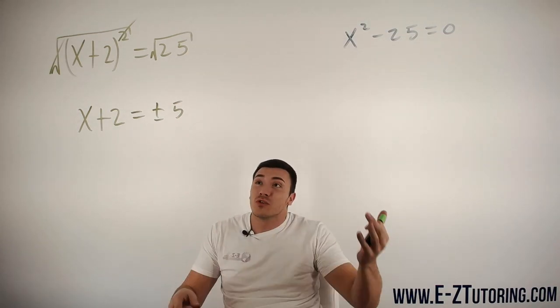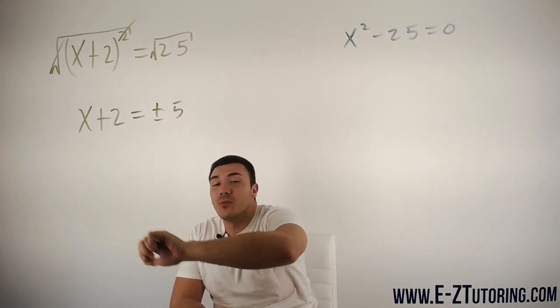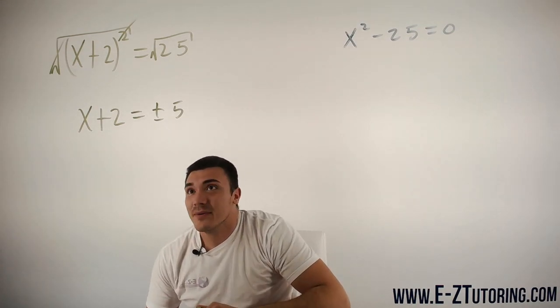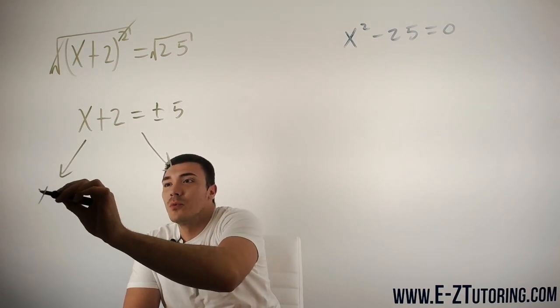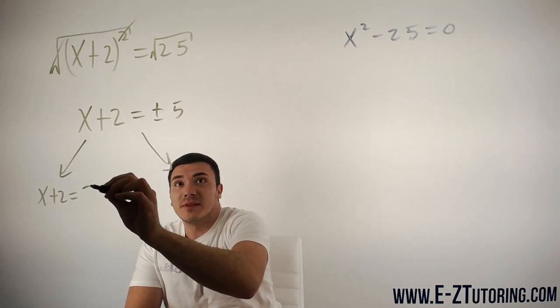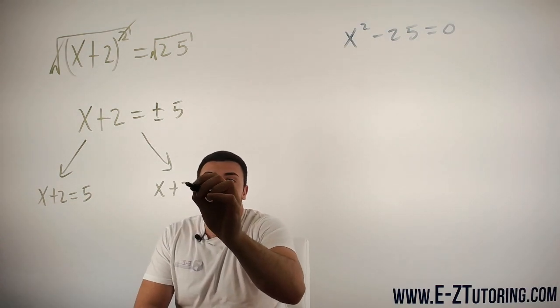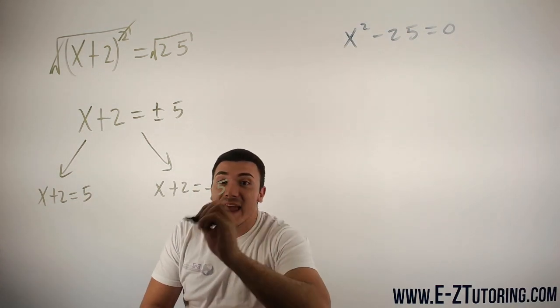You want to take the square root of a square and that will leave you with whatever is inside. All right, so now this will give us two separate equations. We'll get one of them which is x+2 = 5, and another one which is x+2 = -5.